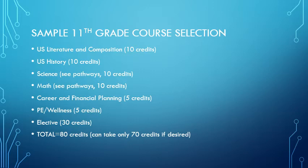Career and Financial Planning typically happens in your 11th grade year for 5 credits, P.E. and Wellness for 5 credits, and Electives for the remaining 30 credits, equaling a total of 80.